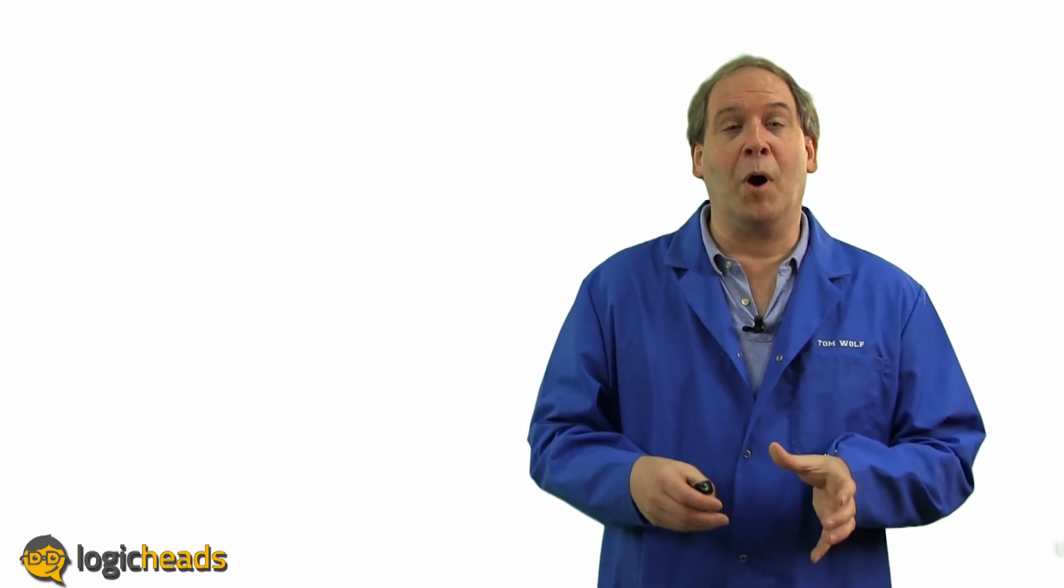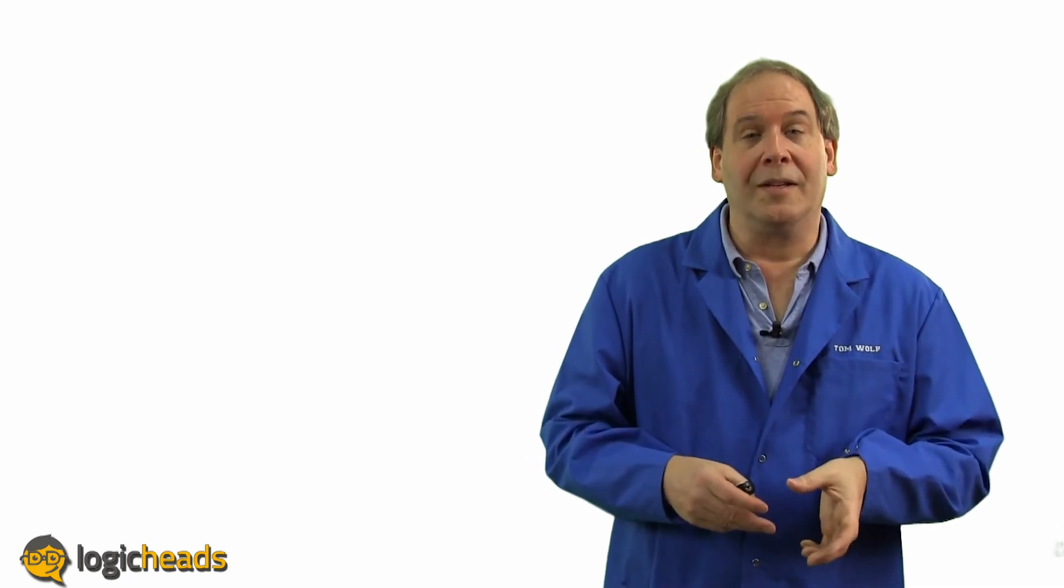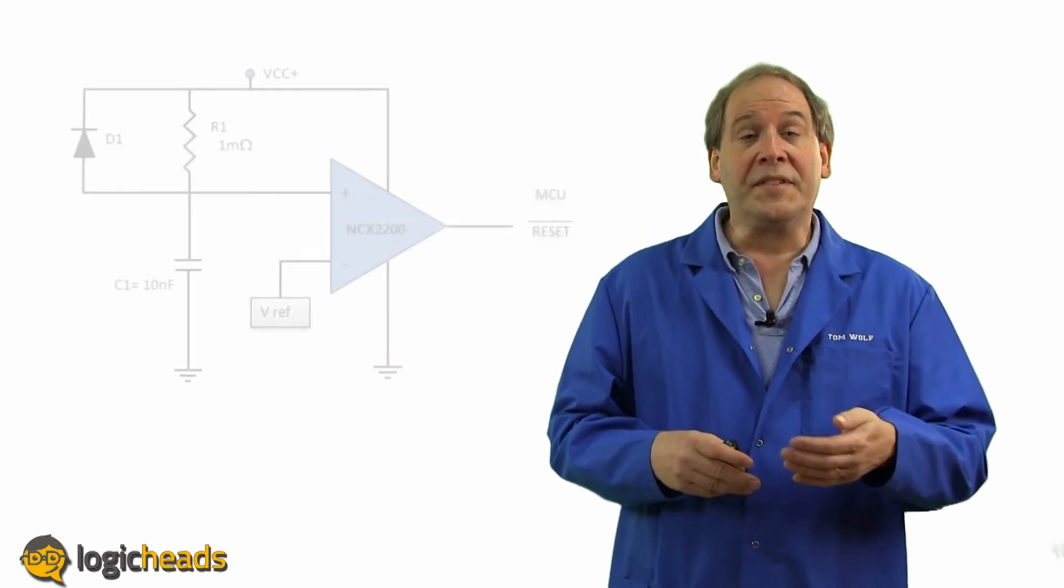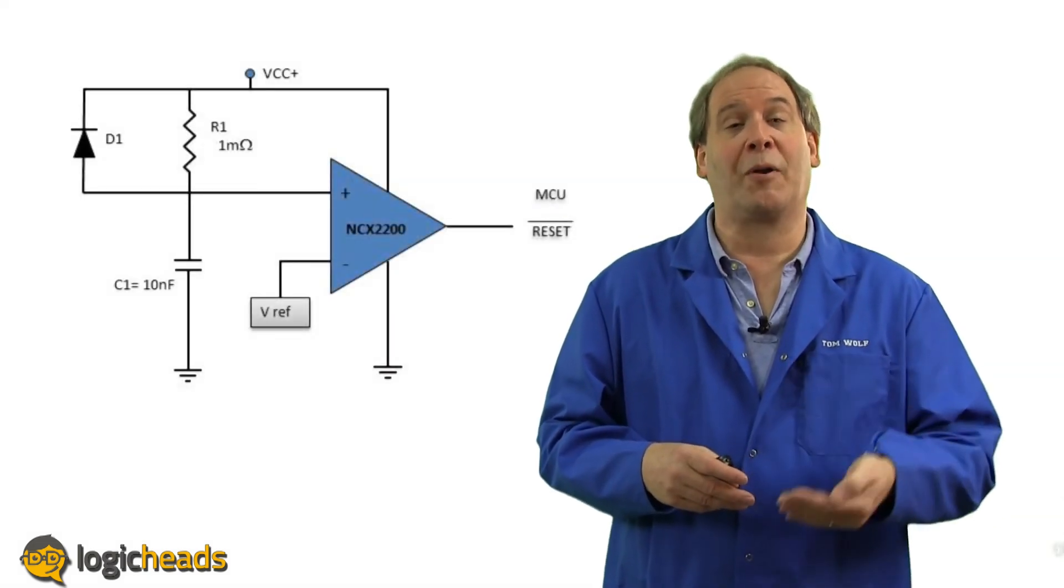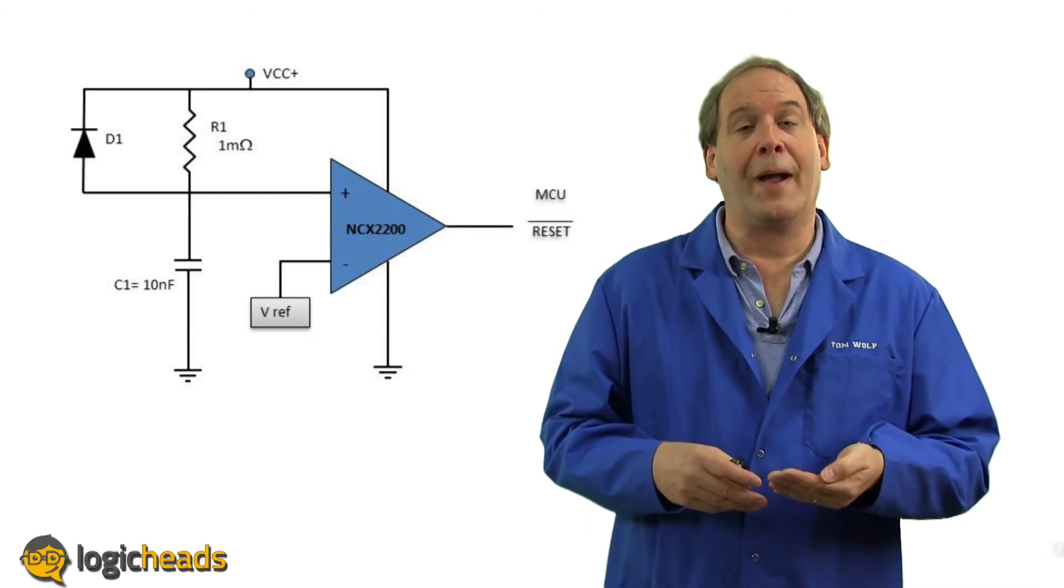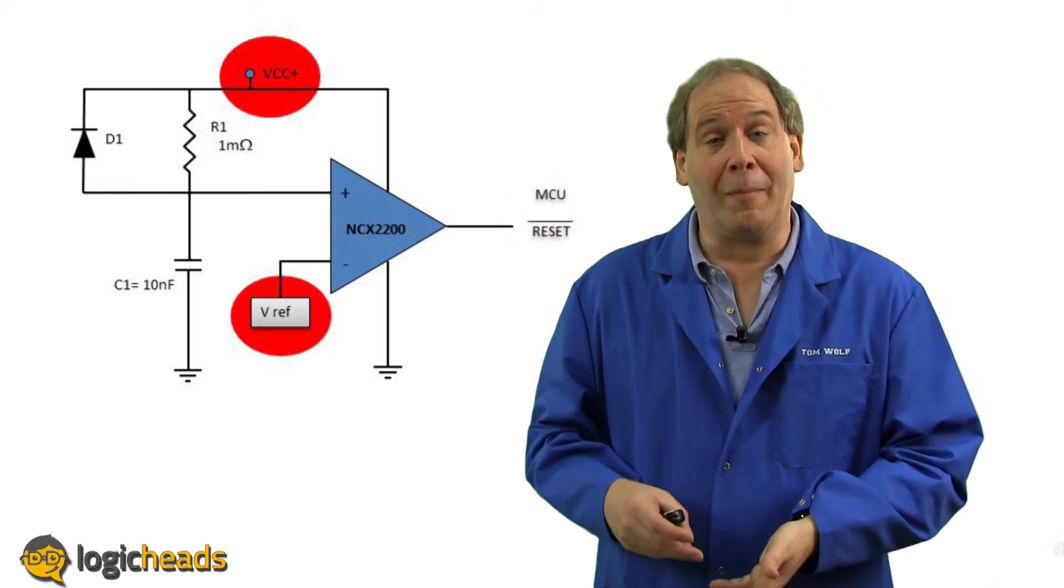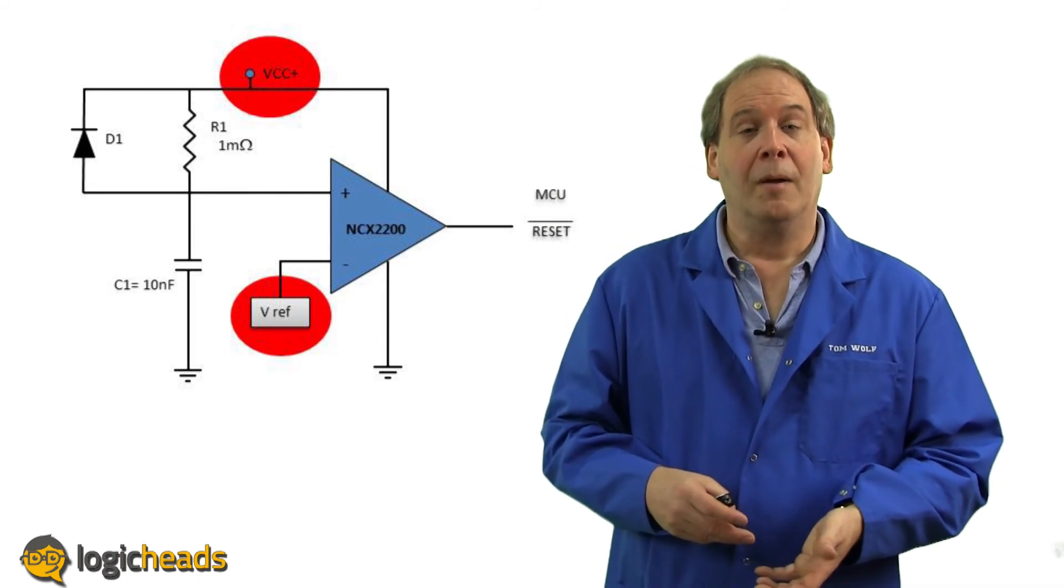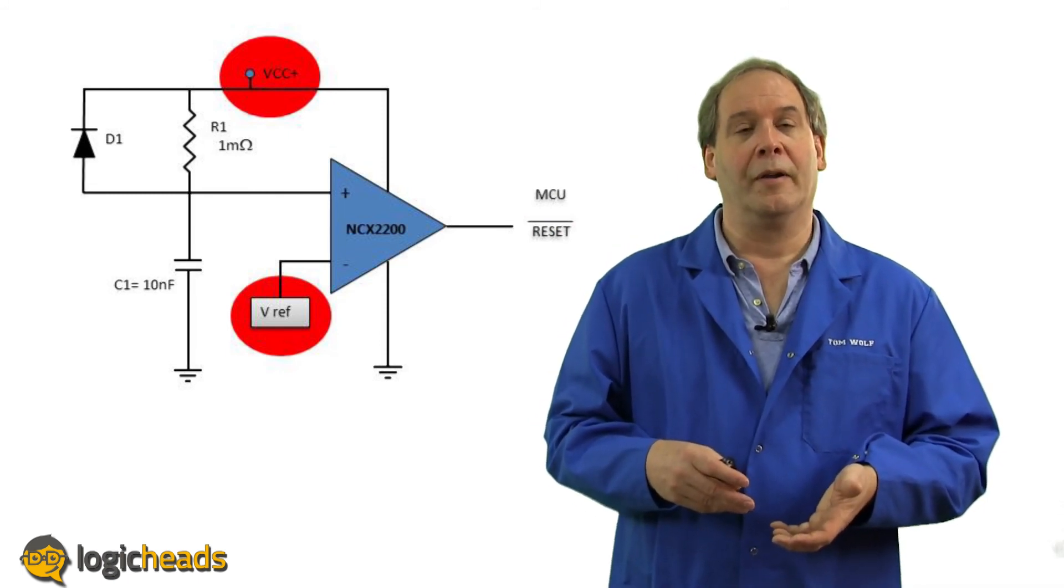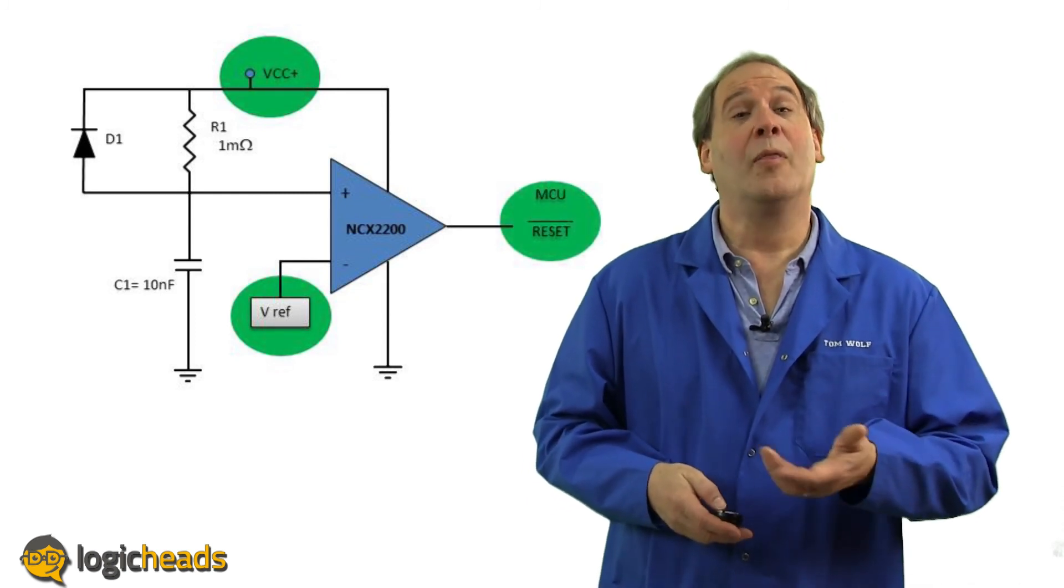And yet another common application for comparators. Whenever a laptop or mobile phone or pretty much any electronic device resets, the micro needs to wait until the voltage supply is stable, then have its reset pin held for a certain amount of time. This comparator circuit watches the power that goes into the microprocessor. When the power is first turned on, the comparator holds the micro in a safe reset mode until the proper voltage reference is met. Then it waits the appropriate amount of time for it to stabilize before releasing the reset line on the micro and letting it start. Again, simple and reliable way of making sure that your microprocessor works the way you intended it to.